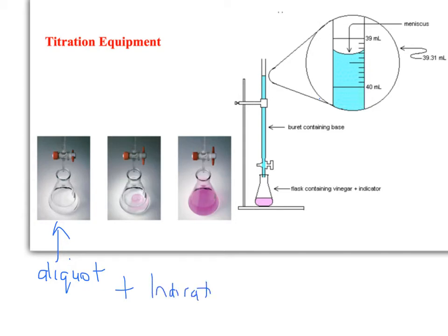We add indicator. And for our experiment we're going to be using phenolphthalein, which starts off colorless. And at the end of the titration, when you've exactly titrated the right amount to neutralize that base in the flask, it will turn pink.